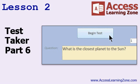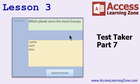In lesson two, we're continuing the test taker. We're going to set up the form so we can click the begin test button, and it's going to go out, look at the list of questions that have not been answered, and pull in the question data. In lesson three, we're at test taker part seven. We're going to put the question and answers up on the screen and write code so that when you pick an answer and submit it, the system can save that in the table, figure out if it's right or wrong, and move on to the next question.